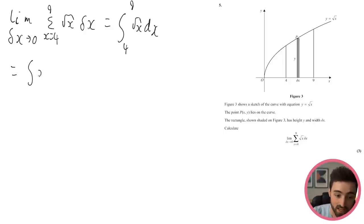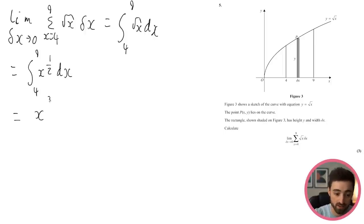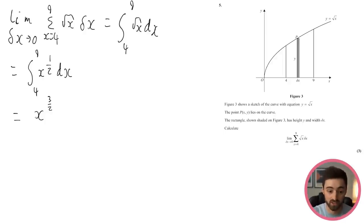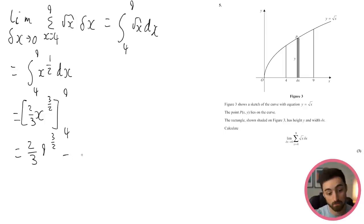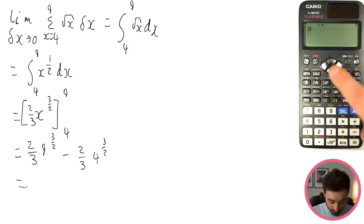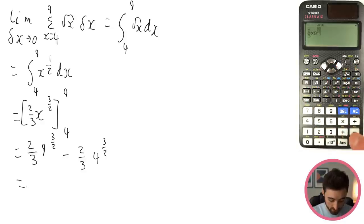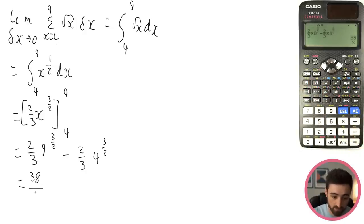So the limit equals the integral from 4 to 9 of √x dx = integral of x^(1/2). Adding 1 to the power gives x^(3/2), and dividing by 3/2 (i.e., multiplying by 2/3) gives 2/3 · x^(3/2). Evaluating between 4 and 9: 2/3 × 9^(3/2) − 2/3 × 4^(3/2) = 38/3.